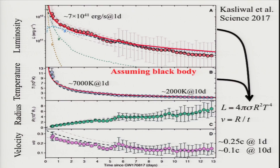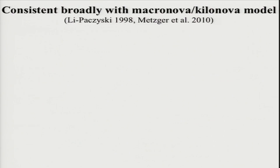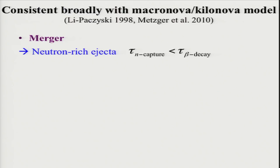All these observational results are consistent with the macronova or kilonova model. In this scenario, after the merger of a binary neutron star, by some mechanism, neutron-rich matter is ejected. Neutron-rich matter means that in this ejecta, the neutron capture timescale is much shorter than beta decay. By capturing free neutrons in this ejecta, nucleosynthesis proceeds and neutron-rich heavy elements are synthesized. This was originally proposed by Lattimer and Schramm many years ago.